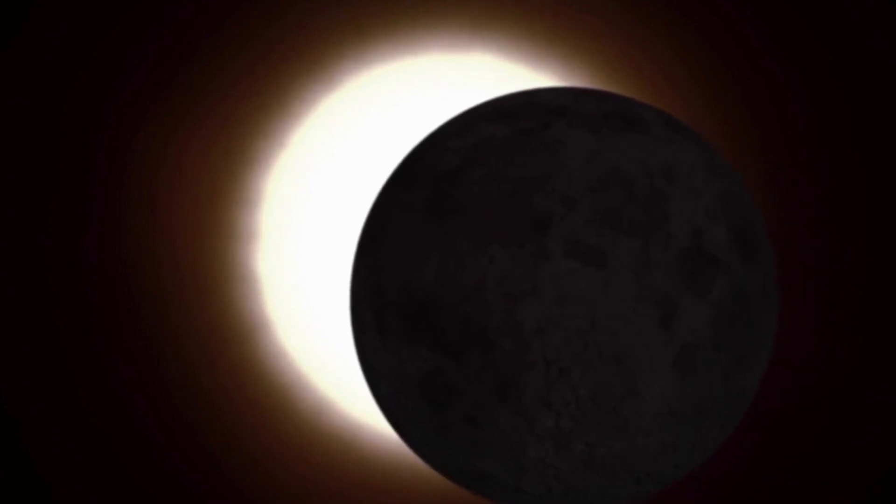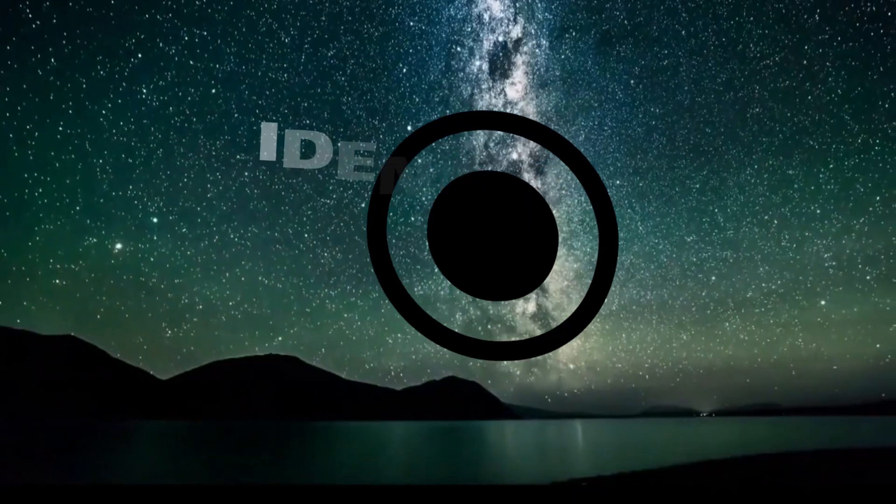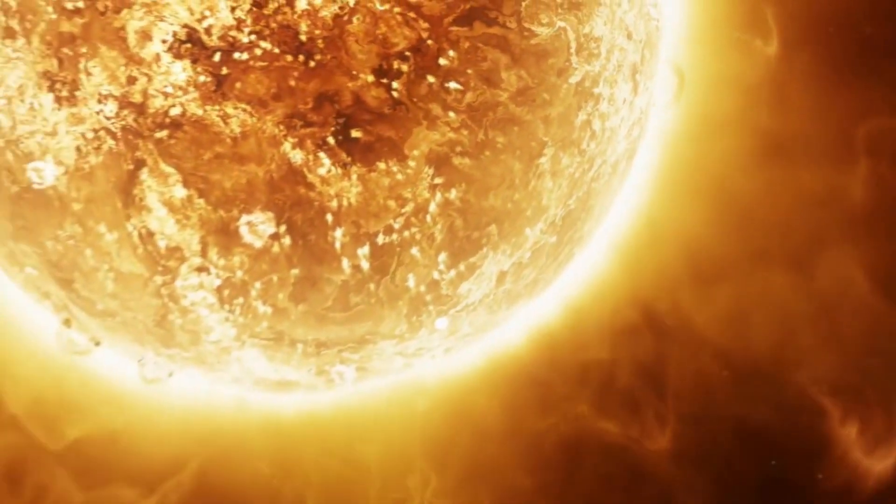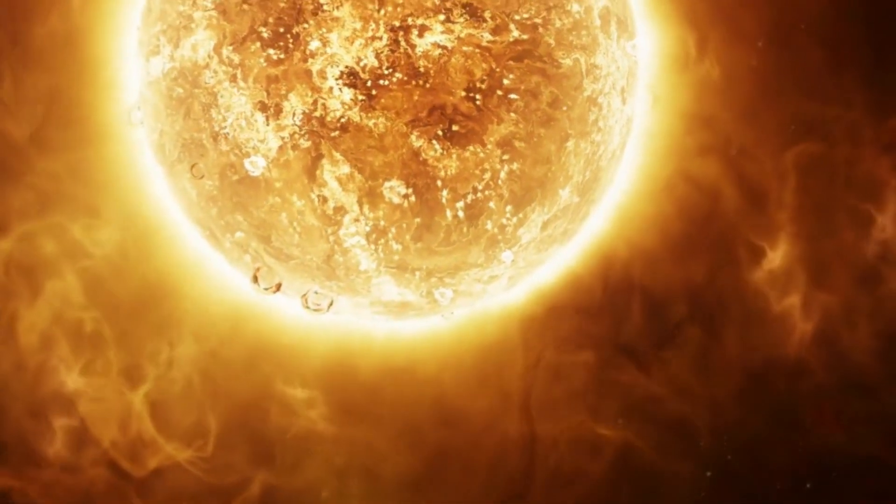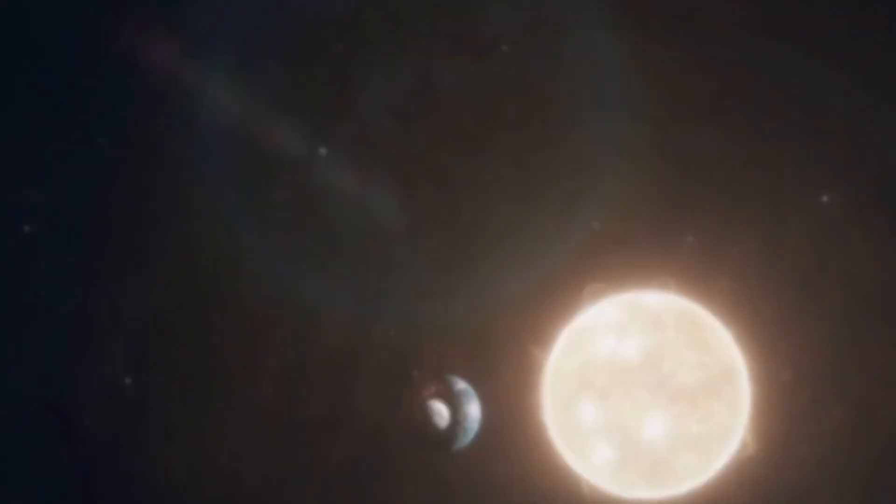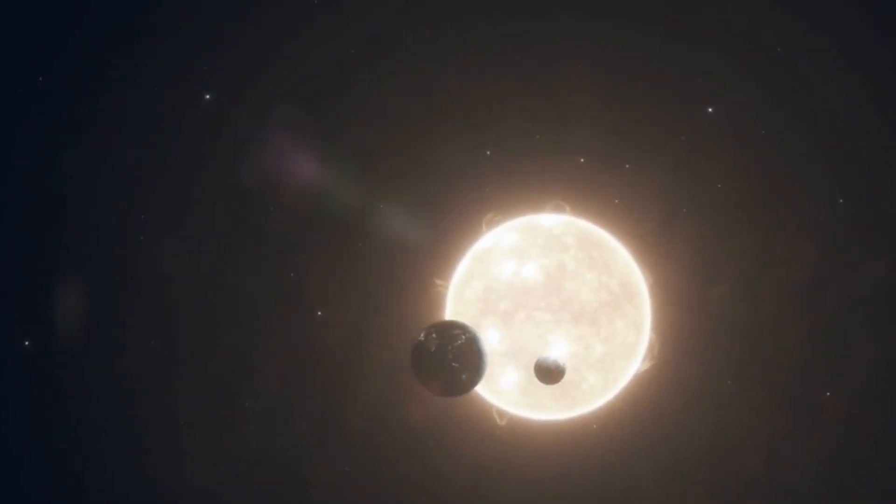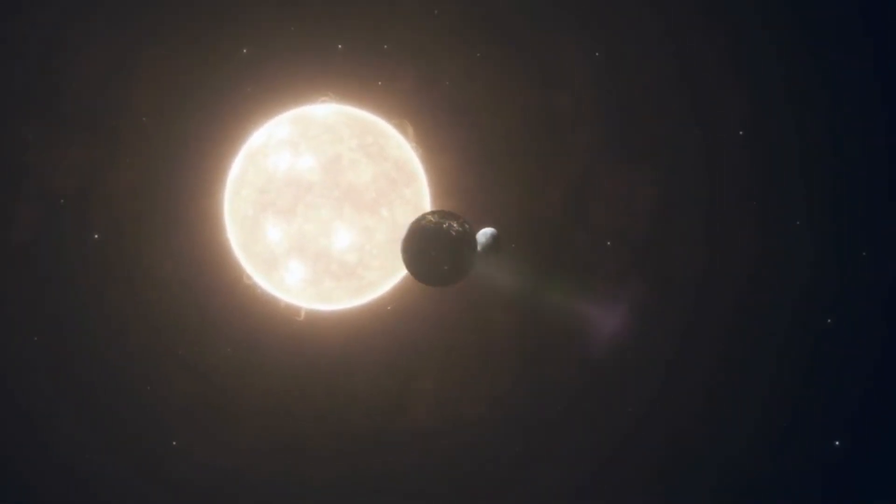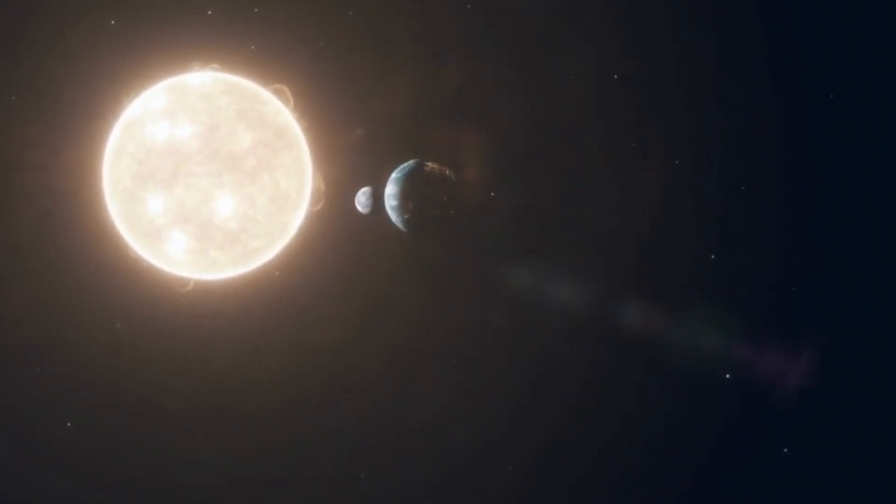Question two. Identifying solar eclipses. How can we differentiate between a solar eclipse and a lunar eclipse? A solar eclipse occurs when the moon passes between the Earth and the sun, blocking the sun's light. On the other hand, a lunar eclipse occurs when the Earth passes between the sun and the moon, casting its shadow on the lunar surface.